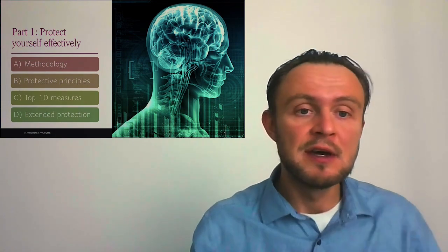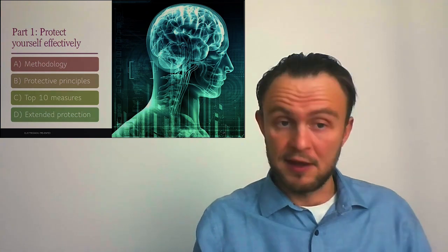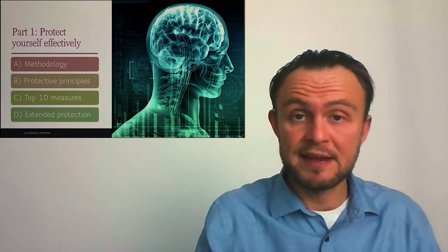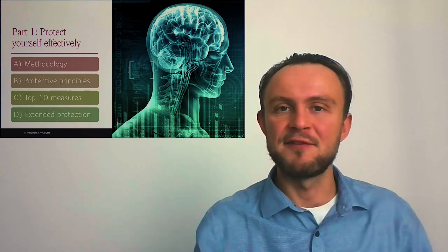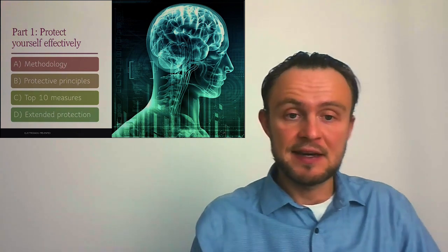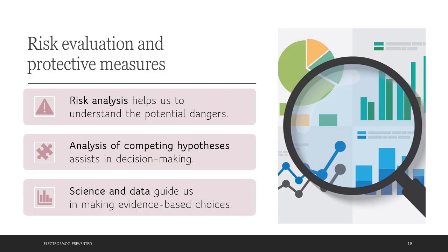First, we will look into methodology, how I have evaluated which effects are most important and which measures are most effective. We will look into protective principles that can be applied in any situation. Then we will look into most effective measures for 10 most risky technologies. And we also look into extending this protection for individual situations. For evaluating risks, I use science and data that guide me in making evidence-based choices. We have seen analysis of competing hypotheses, which is very useful for difficult decision making, which helped me to decide whether or not electromagnetic fields can result in adverse health effects.